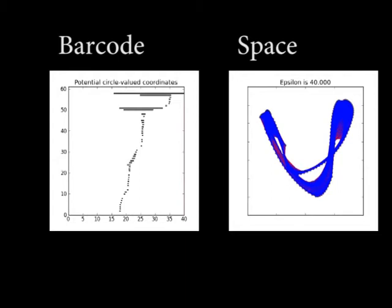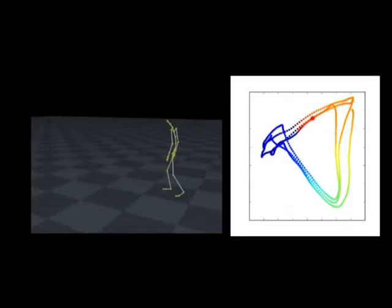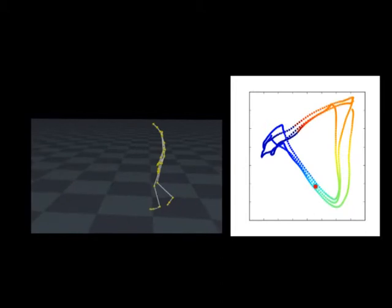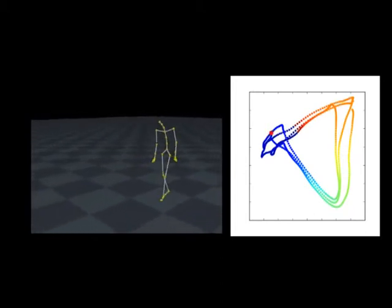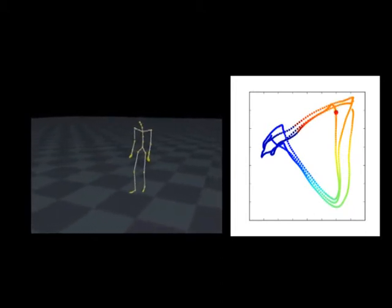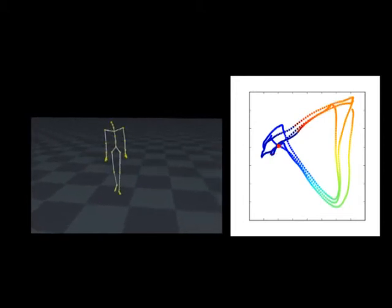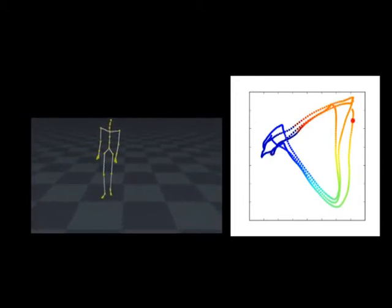The details are given in the paper. In good cases, the resulting coordinate function assigns like values to similar poses. We can detect these good cases and then track periods and phases intrinsically. We show the resulting coordinate function here with colors representing the coordinate values on the circle.